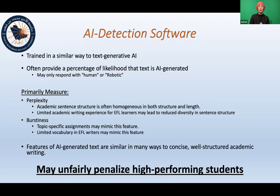The other issue is burstiness — predictable word choices and word repetition. If students are writing on a specific topic, they are likely to use the same words multiple times because they are simply topic-related words. For foreign language learners of English, their writing mimics this even more due to limited vocabulary. Unfortunately, the features of AI-generated text are similar in many ways to very well-written academic text, meaning that high-performing students may be unfairly penalized when all work is run through AI detection software.